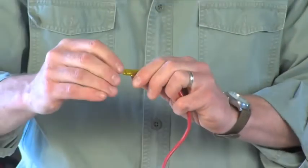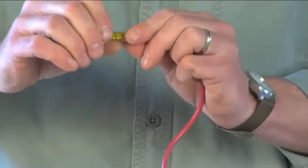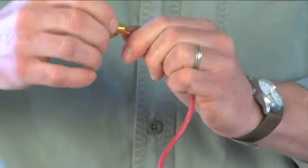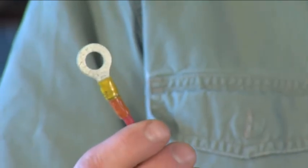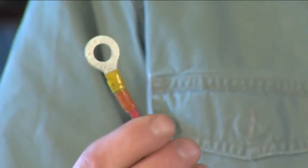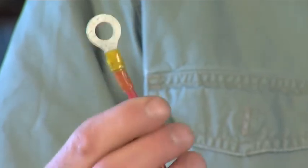You want to be careful not to compromise the heat shrink tubing around the terminal. By the way, always use ring terminals whenever possible in a marine application, as they are much more secure than spade terminals.